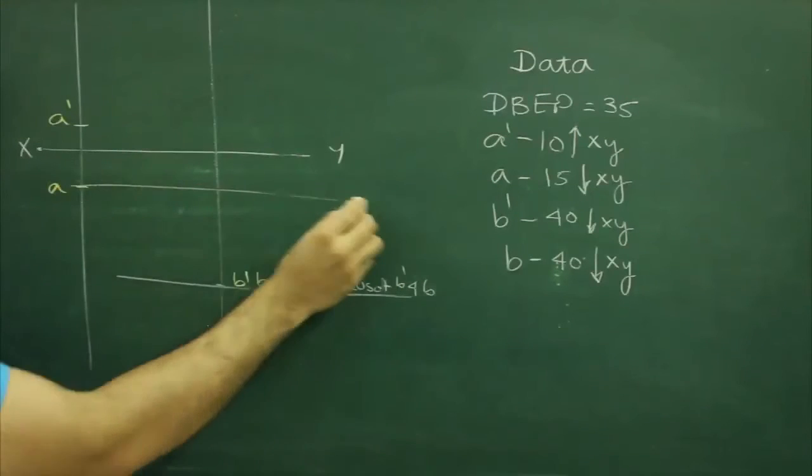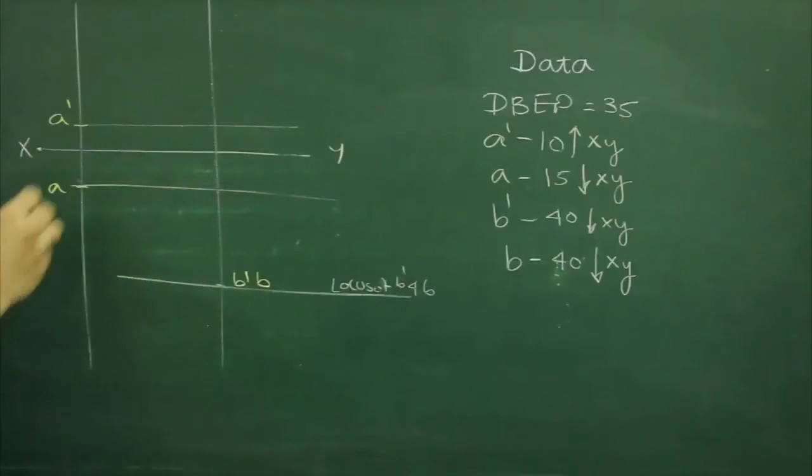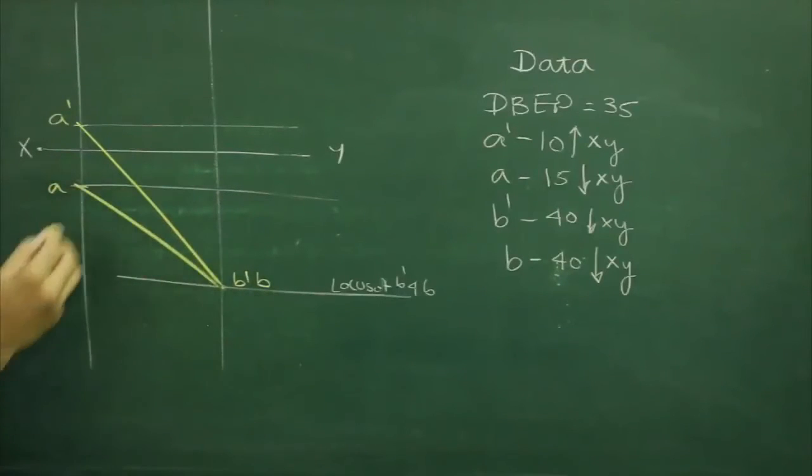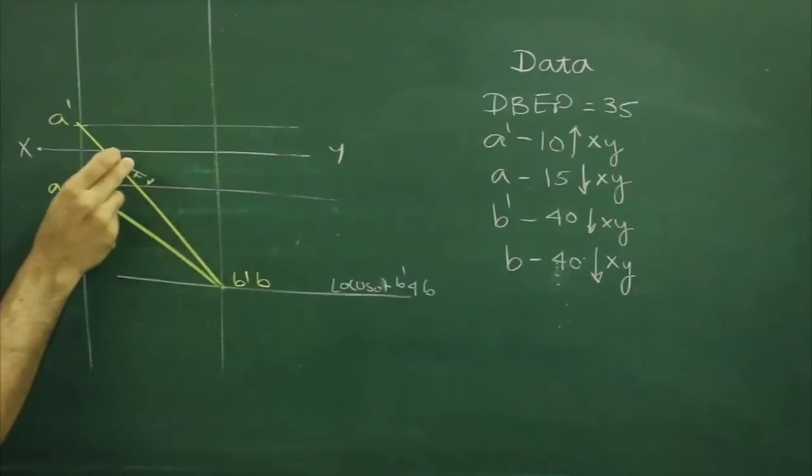We will draw horizontal line from A and B. Join A' and B' and A and B. This is front view and this is top view.